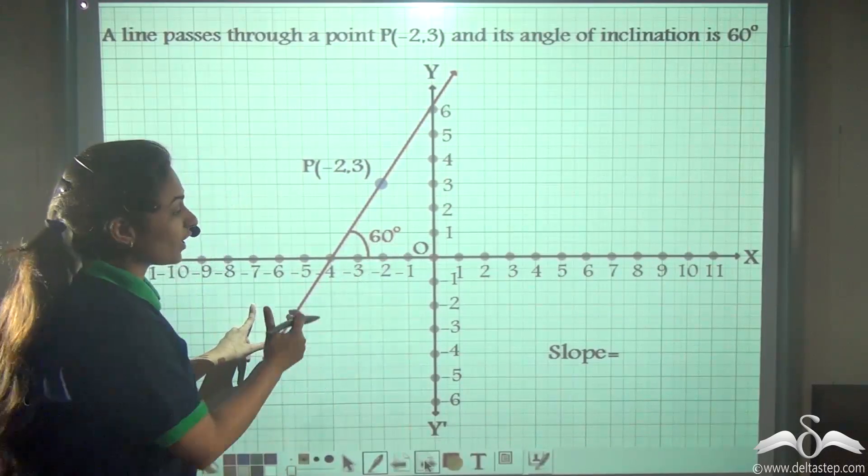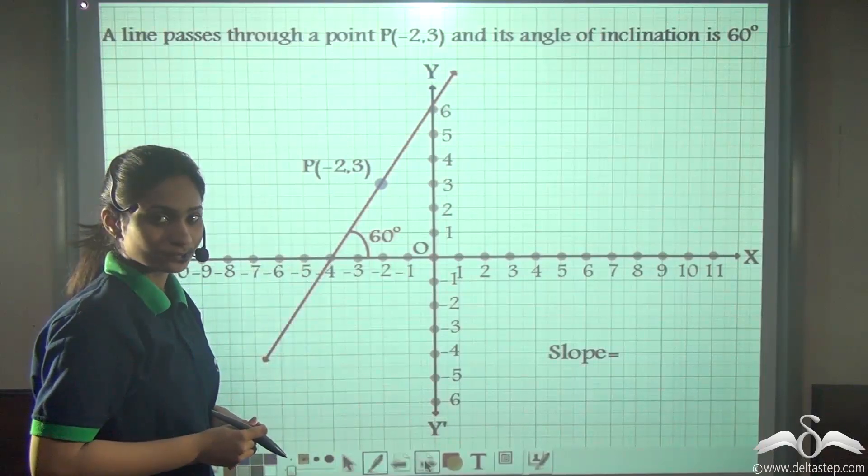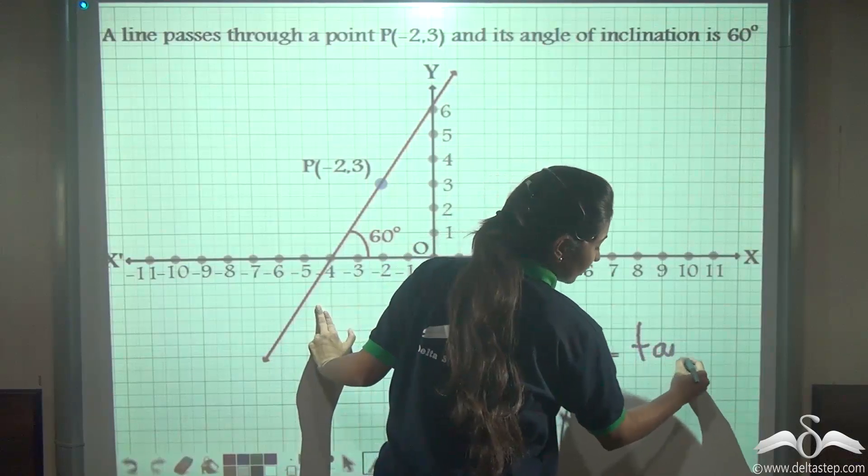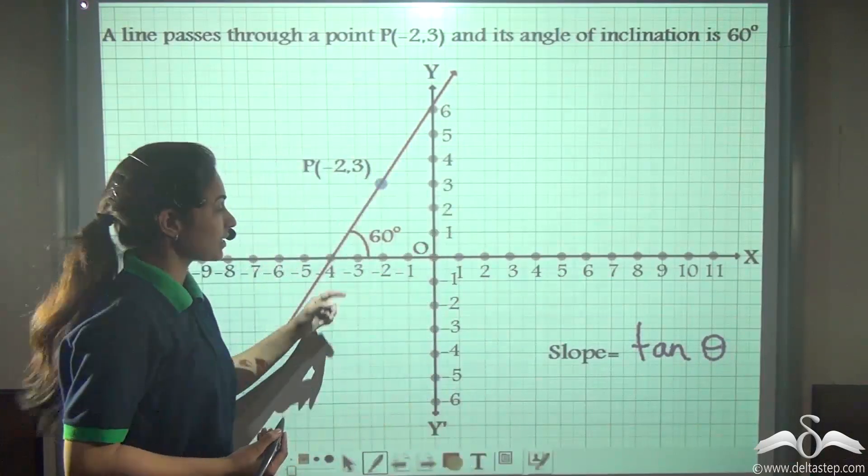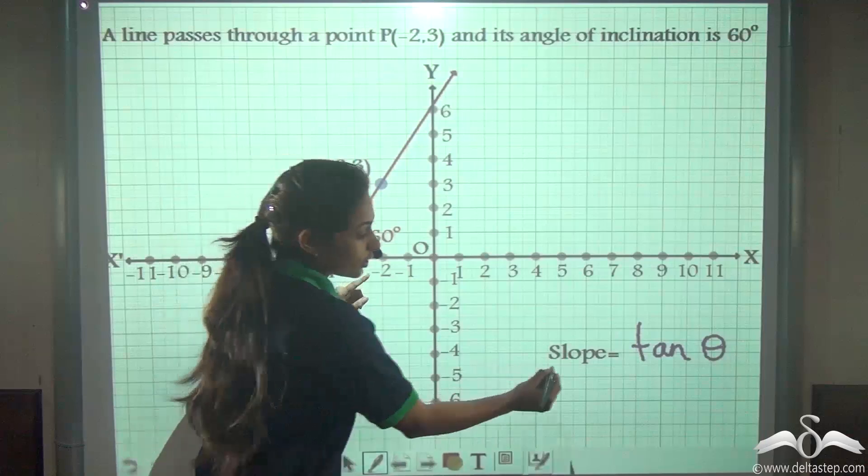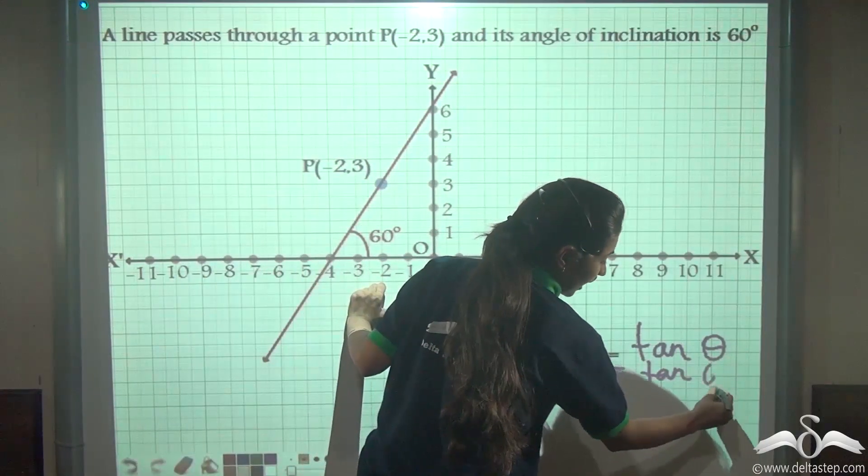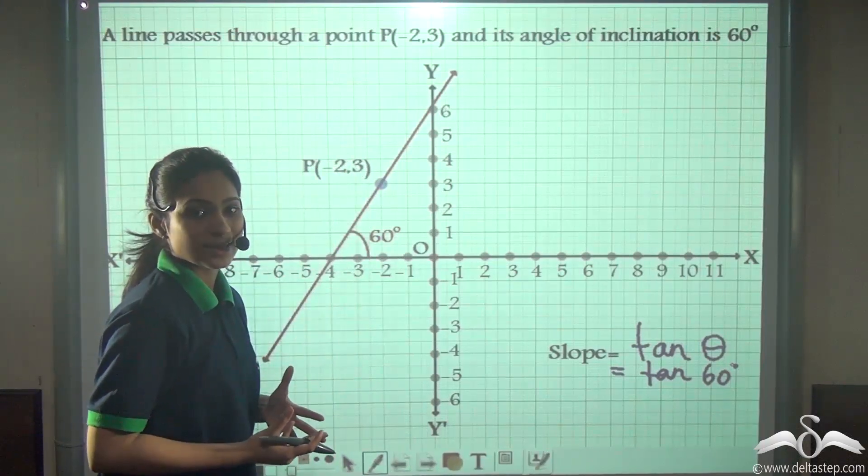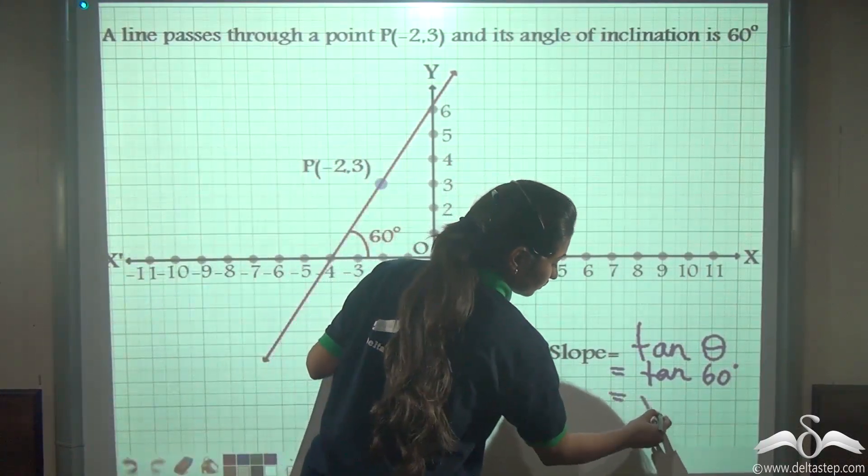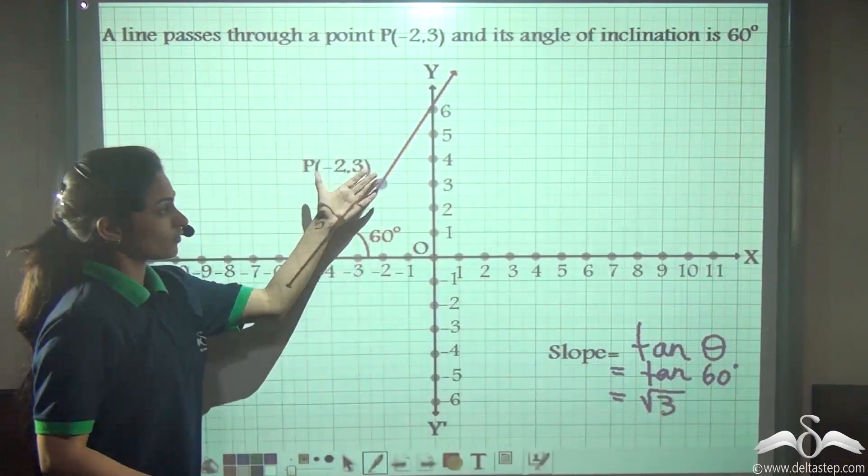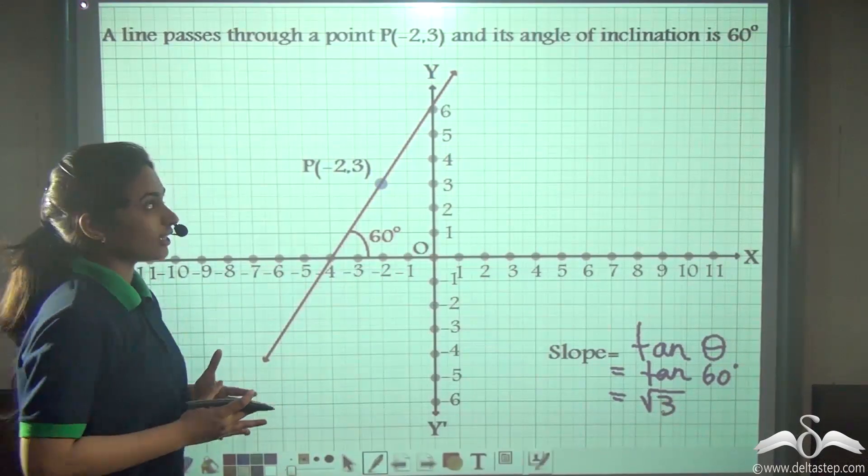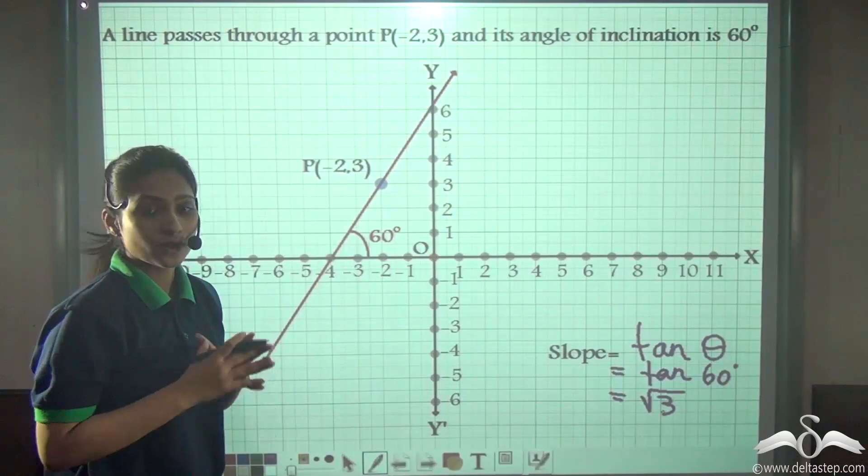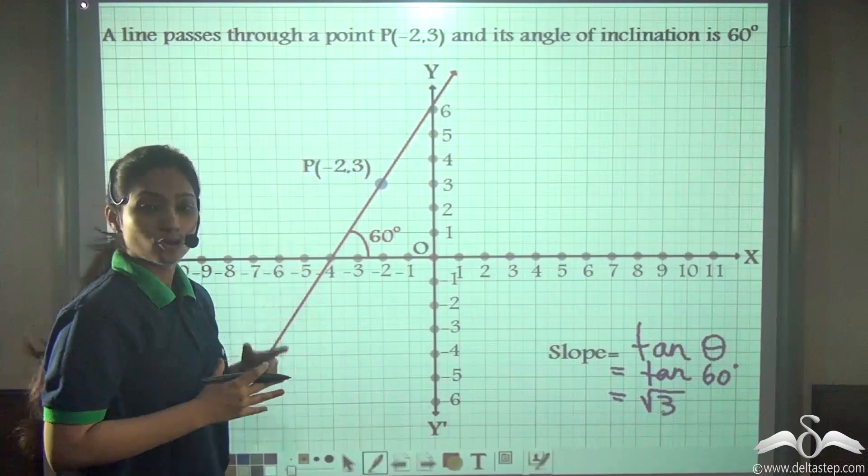Now if I ask you to find the slope of this line, can you find out? Yes, we know that slope is tan θ, where θ represents angle of inclination. So here tan 60, θ is replaced with 60. So tell me what is the value of tan 60? It is √3. So the slope of this line is √3. You could see that using the two informations we could find out the third information. So that means we do not need all the three information to be present to draw a line.